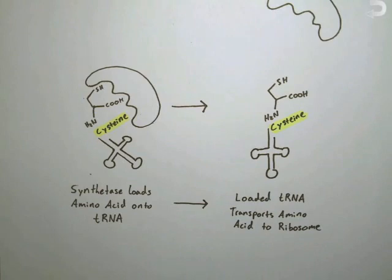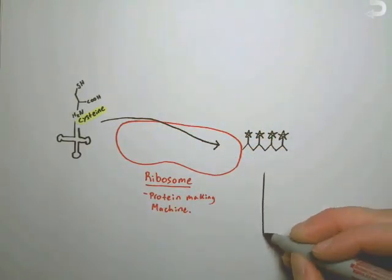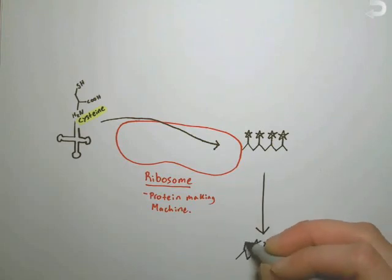Next the loaded tRNA is transported to the ribosome where the amino acid is unloaded and then added to the chain of other amino acids, making a protein.